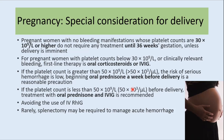In pregnant women with no bleeding manifestations whose platelet count is 30,000 or higher, treatment is usually not required until 36 weeks of gestation unless delivery is imminent. If the platelet count is below 30,000 or clinically relevant bleeding is present, first-line therapy is oral corticosteroids or IVIG. If the platelet count is greater than 50,000 and risk of bleeding is low, oral prednisolone can be started a week before delivery as a reasonable precaution. If the platelet count is less than 50,000 before delivery, treatment with oral prednisolone or IVIG is usually recommended.